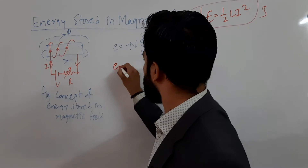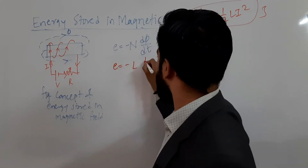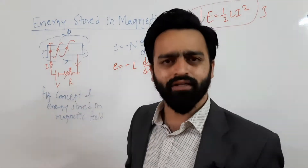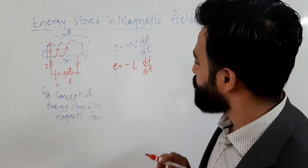Also, considering the principle of self-induction, I can write e = -L·di/dt, because we are considering a simple coil through which current is flowing.